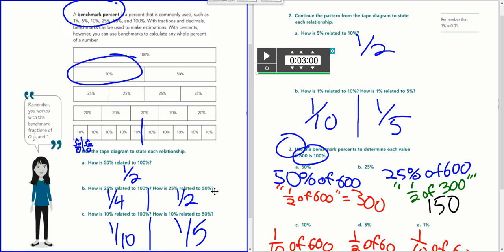And here, 25% is what, how is it related to 50? Well, 25% is half of 50. And then 10%, it takes 10 of these to equal 100%, so it's one-tenth.